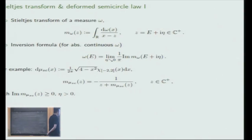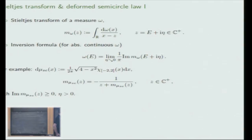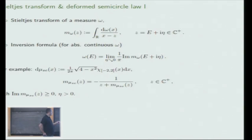For example, if I have the semicircle law, one can compute the Stieltjes transform explicitly and check that it satisfies a certain relation. Alternatively, one can start from there: solve the quadratic equation for M_mu(z), pick the solution that has a positive imaginary part, then feed it into the inversion formula, and that will recover the semicircle law.